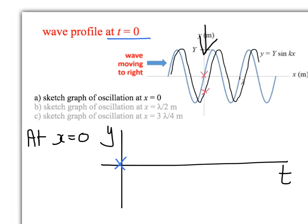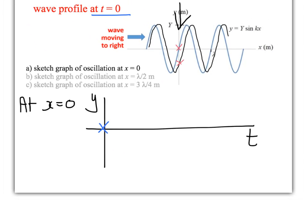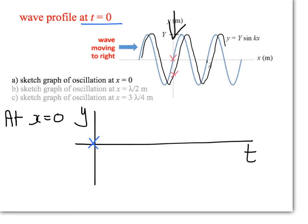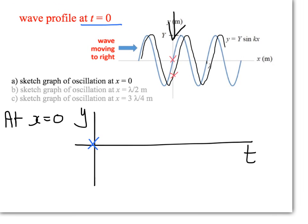So, back to our graph of the oscillation, we know that as time progresses, initially the displacement moves in the negative direction. So the graph of oscillation must look something like that.